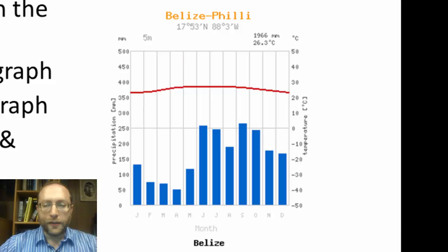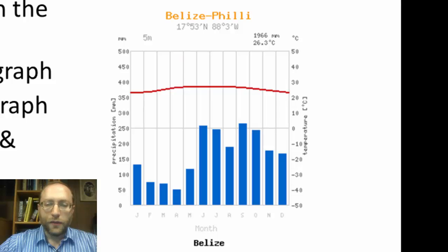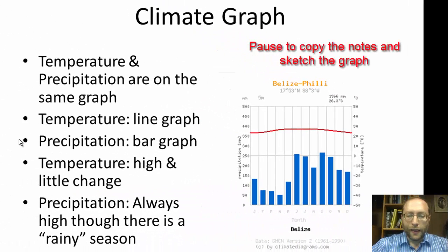Looking at and describing this graph, the temperature is relatively high and also relatively steady. Temperature does not really fluctuate at all over the course of the year, remaining at an average of around the low to mid-20s degrees Celsius — so it's relatively warm. When you look at the precipitation, during quite a few months there's a lot of rain, and even during the drier months there's still some rain.